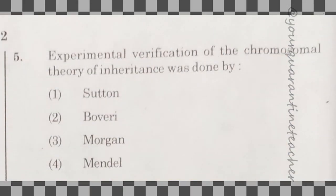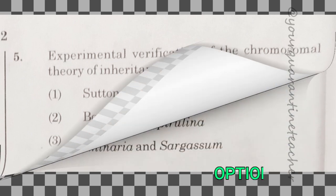5th question: experimental verification of the chromosome theory of inheritance was done by whom? The answer is option 3 — Morgan.